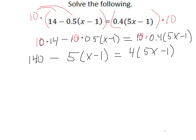Next, that's our clearing fractions or decimals first step. Our next step is to distribute through parentheses. Now, this negative 5, that's what's going to distribute through, or this 4. So on the left side, we have to distribute the negative 5, not just the 5.